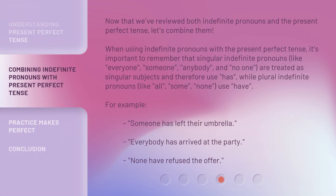Now that we've reviewed both indefinite pronouns and the present perfect tense, let's combine them. When using indefinite pronouns with the present perfect tense, it's important to remember that singular indefinite pronouns — like everyone, someone, anybody, and no one — are treated as singular subjects and therefore use 'has,' while plural indefinite pronouns — like all, some, none — use 'have.' For example: 'Someone has left their umbrella.' 'Everybody has arrived at the party.' 'None have refused the offer.'